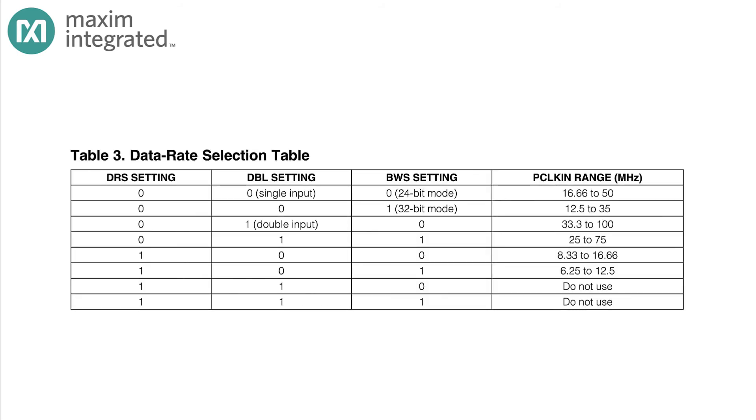We'll start with an older part. If you use this part, you can select the data rate, double mode, and word size via the bandwidth select. You get those three levers and no more. But look at the pixel clock range. You can have a video source with a pixel clock ranging from a low of 6.25 MHz up to a maximum pixel clock of 100 MHz.